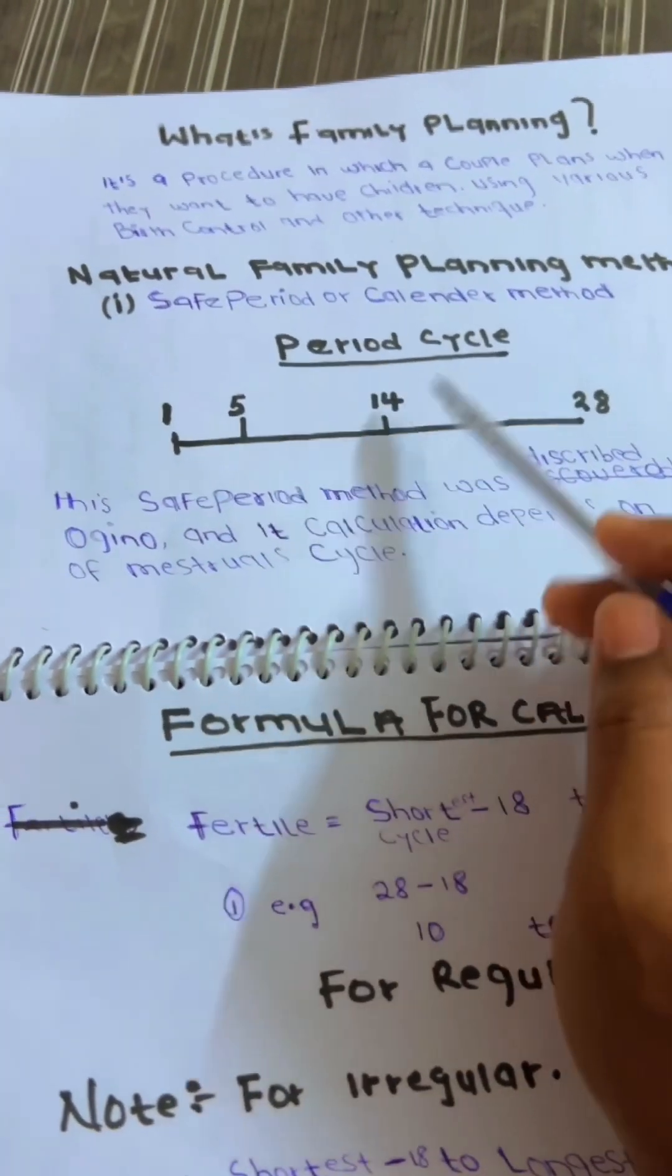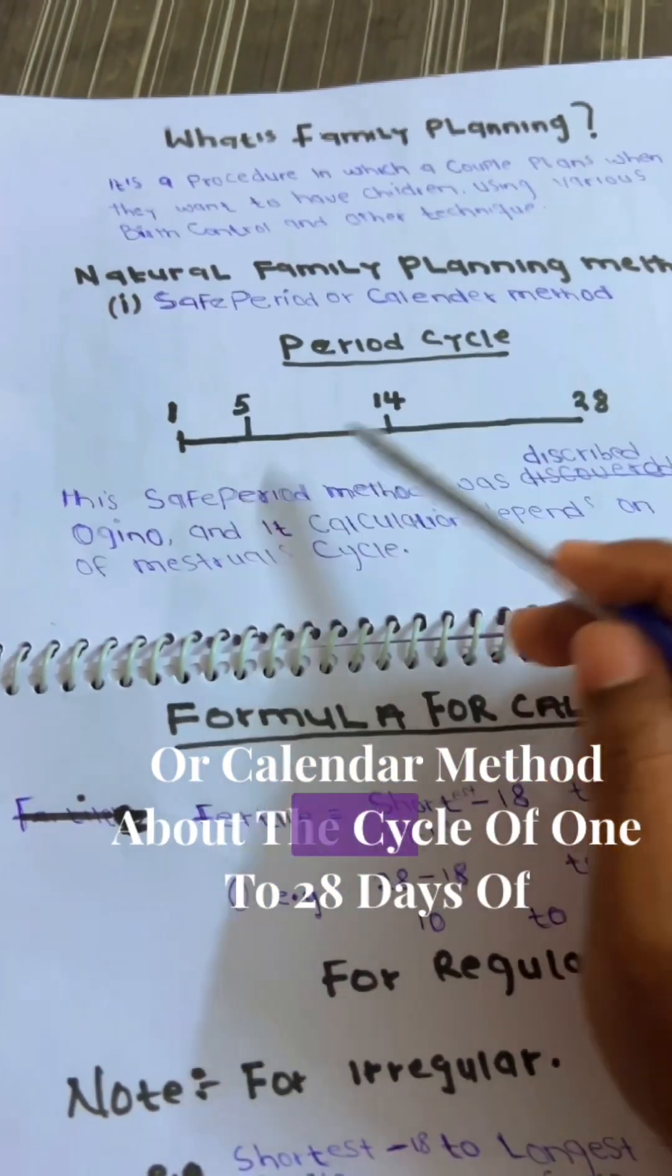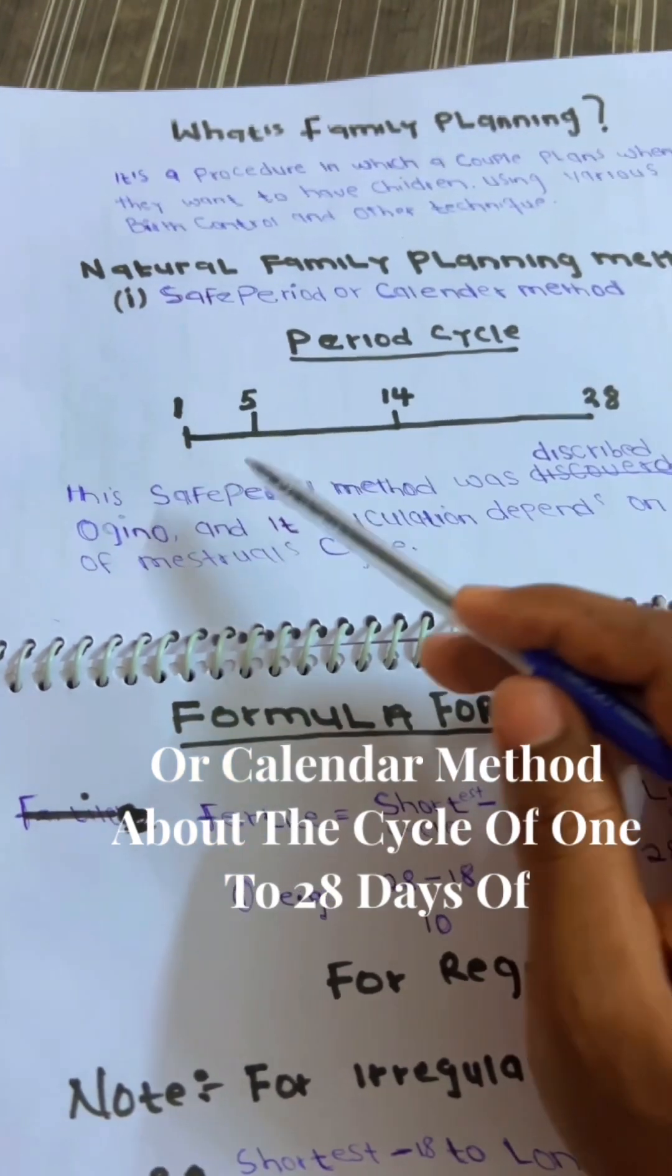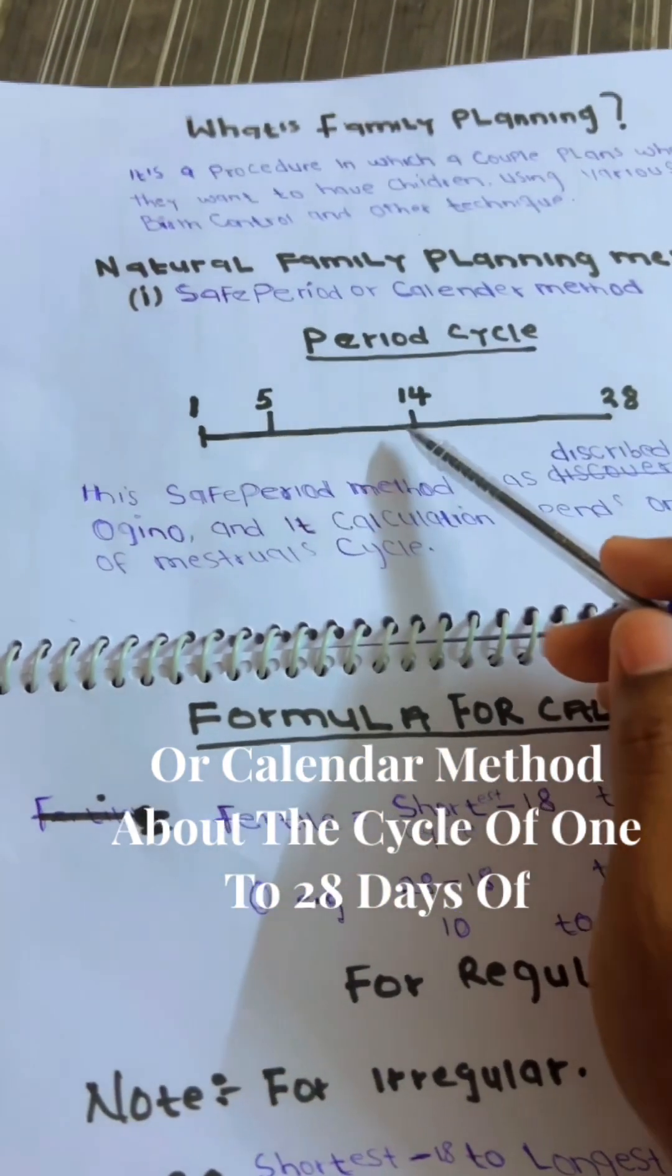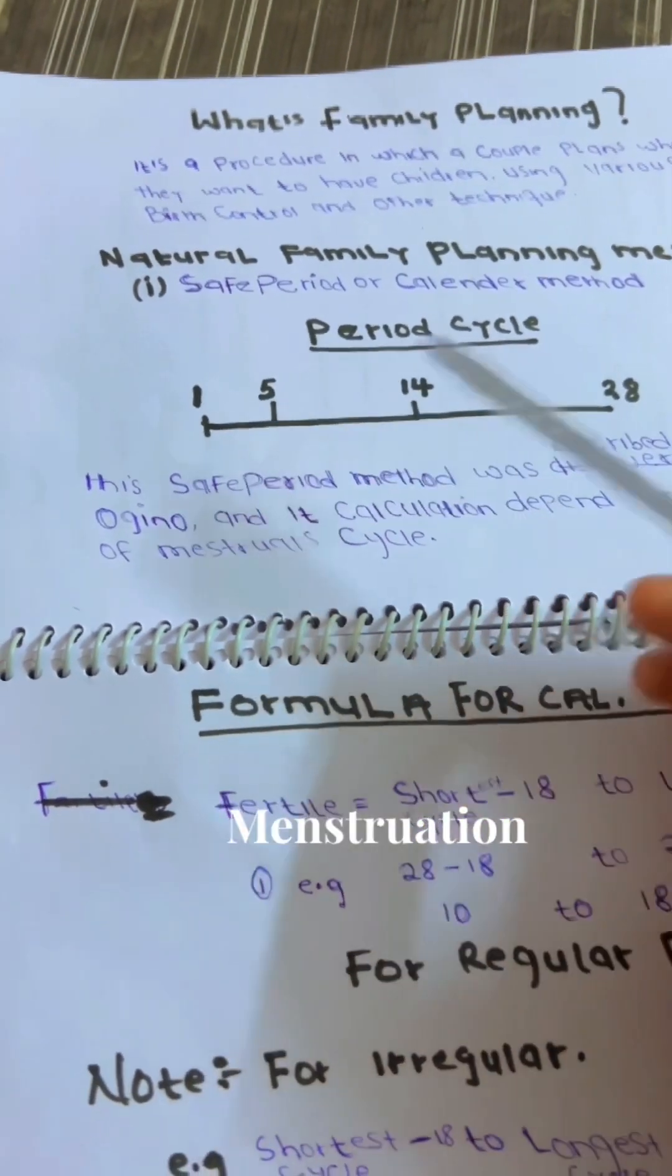Before that, you need to understand the basics for the menstruation cycles. We are talking about the regular cycle of 1-28 days, 14 days of ovulation, and 1-5 days of menstruation.